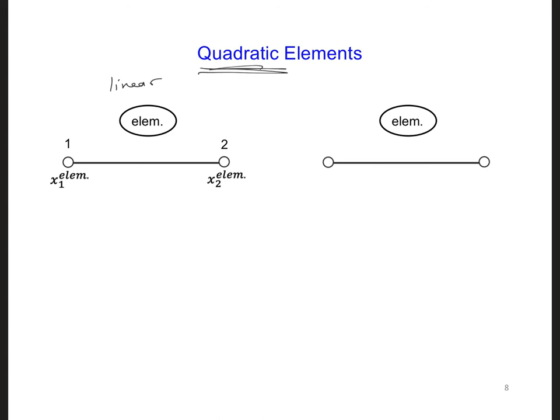And for this linear element, the interpolation functions had a value of 1 at the node. So that for N1, this would go from 1 to 0, and for node 2, it would go from 1 to 0 in reverse.